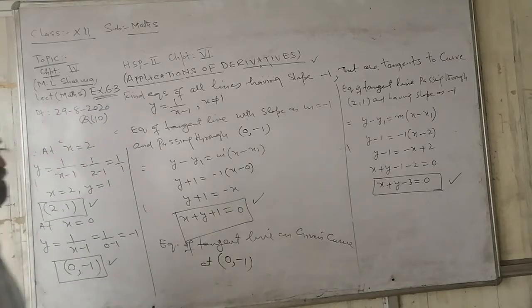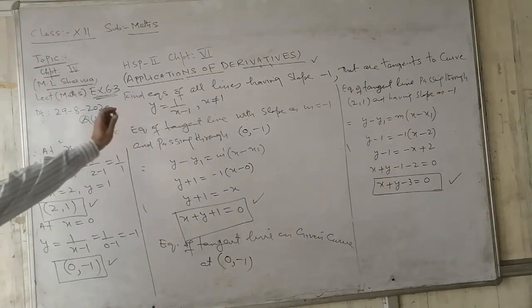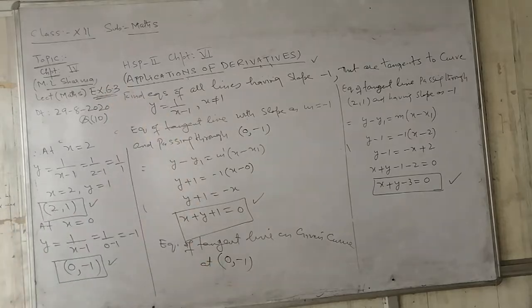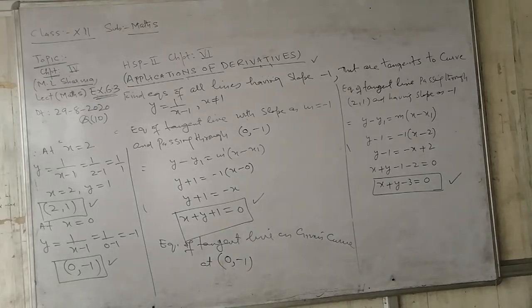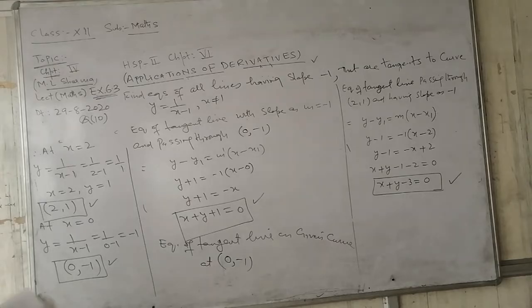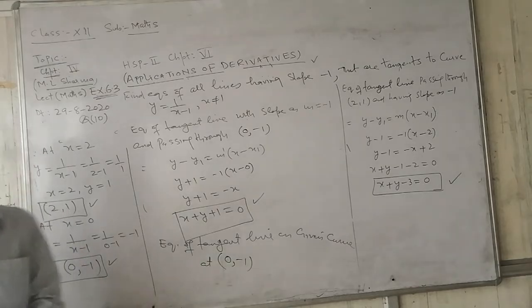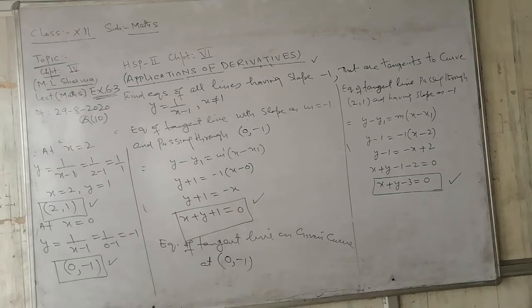So the two tangent lines meeting this curve are x + y − 3 = 0 and x + y + 1 = 0. In this way, question number 10 was solved. Questions 11 and 12 are similar — you can try those yourself. Now let me take question number 13, which is an important one.